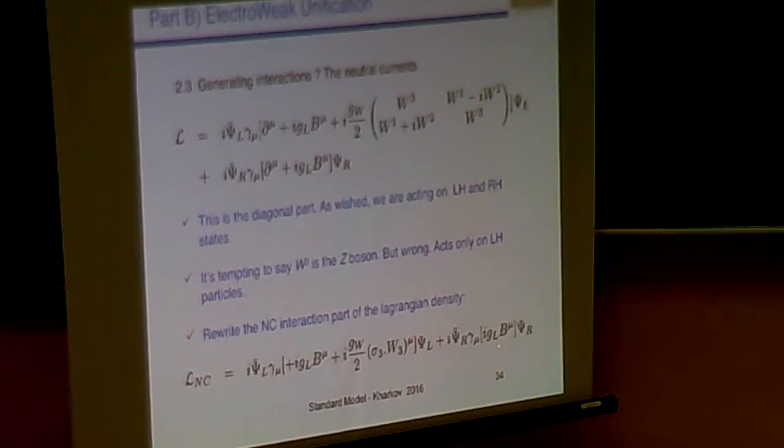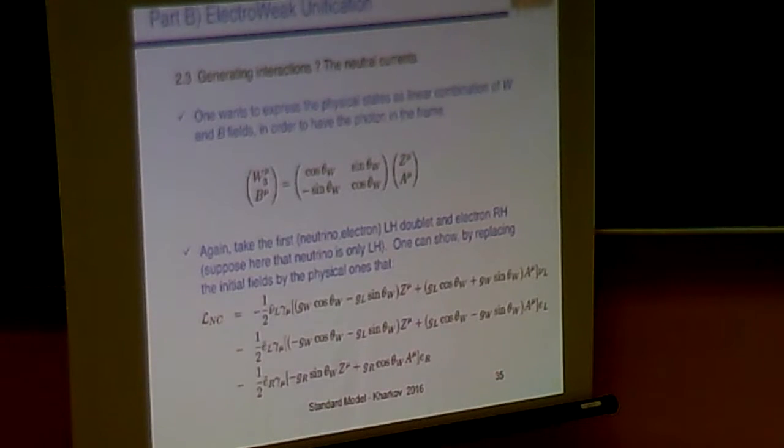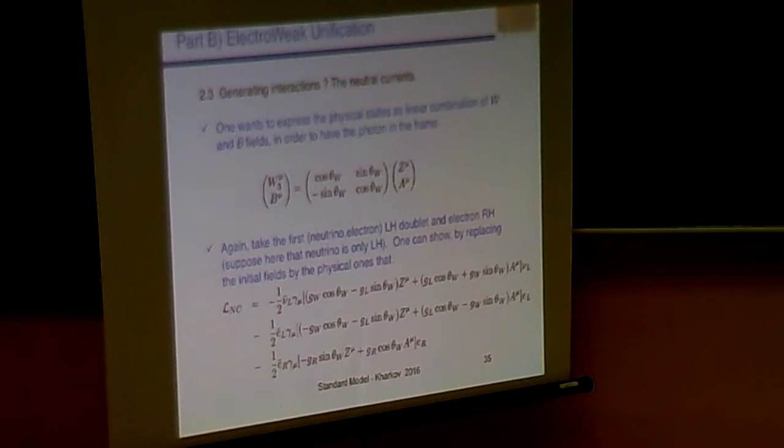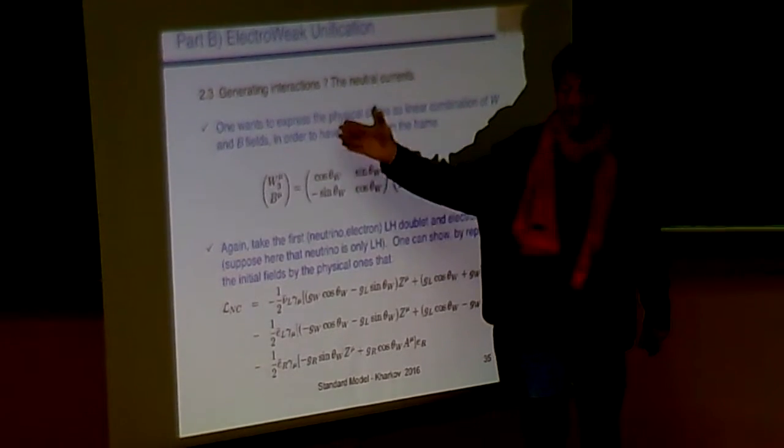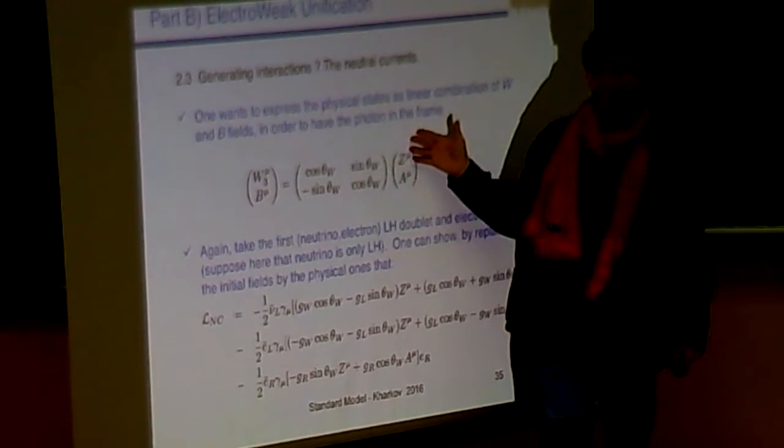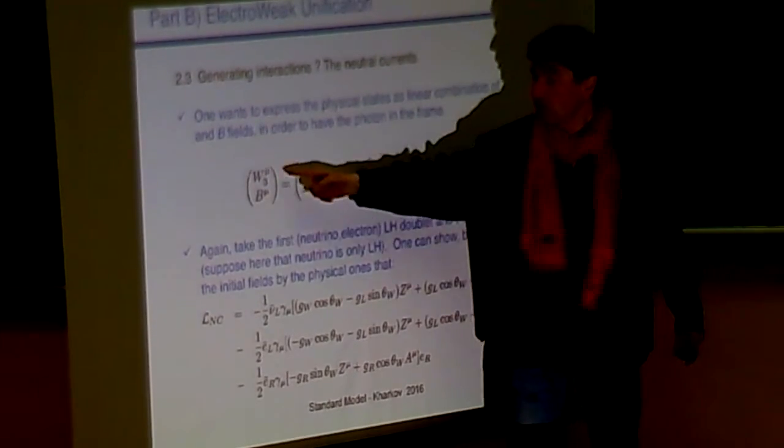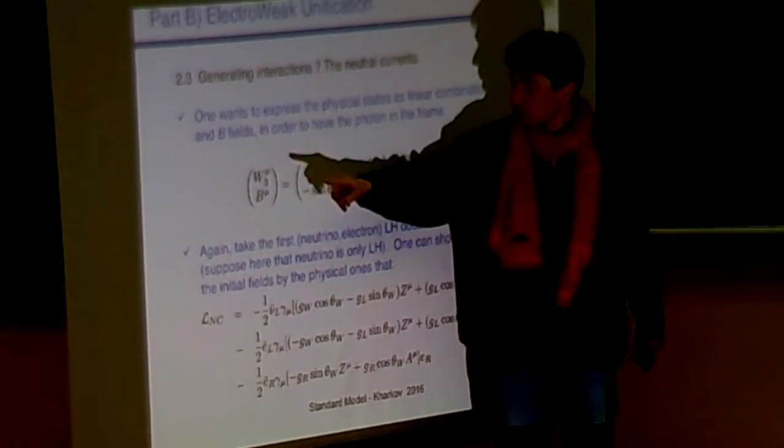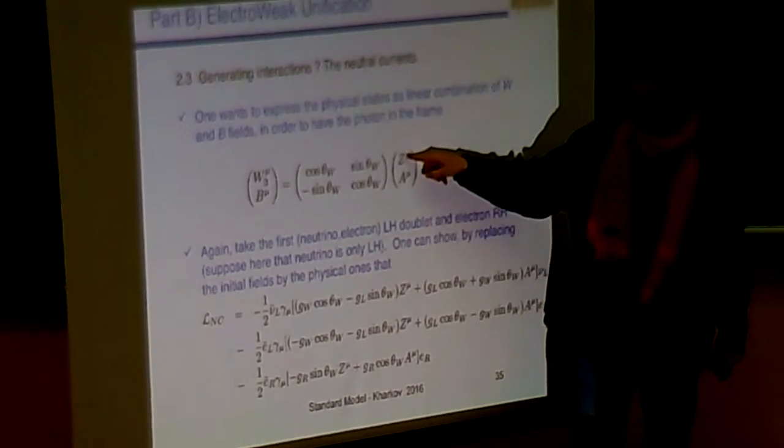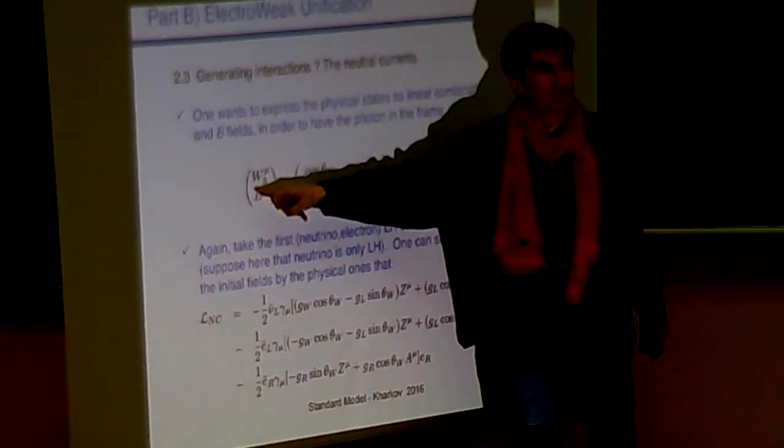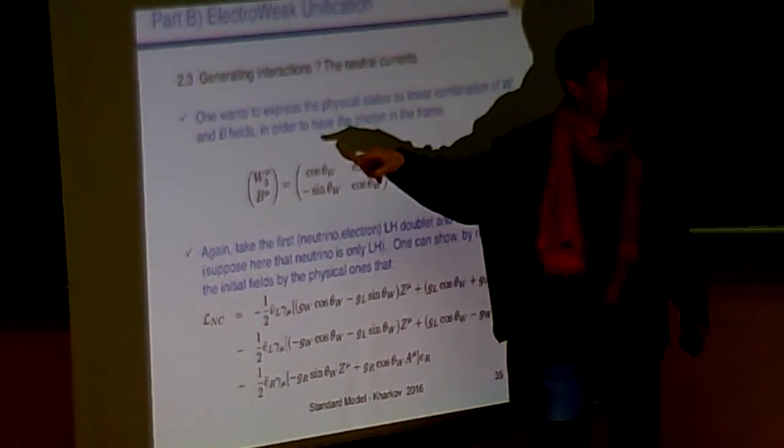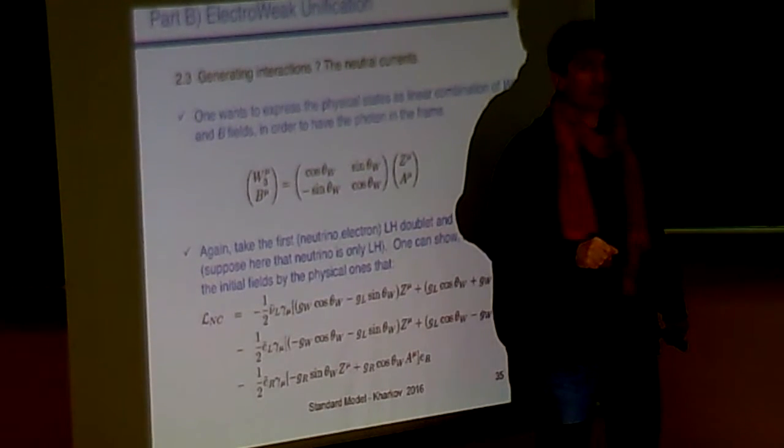So, we start from this Lagrangian density, we are rewriting it. W3 and B mu, they must be related to the photon of QED and the Z boson of the weak interaction. So, what is the most general way to build up those guys? This is by having the rotation of my gauge. So, W3 is not the Z, B mu is not the photon. Instead, the Z is a combination of W3 and B mu, and the photon is also a combination of W3 and B mu.